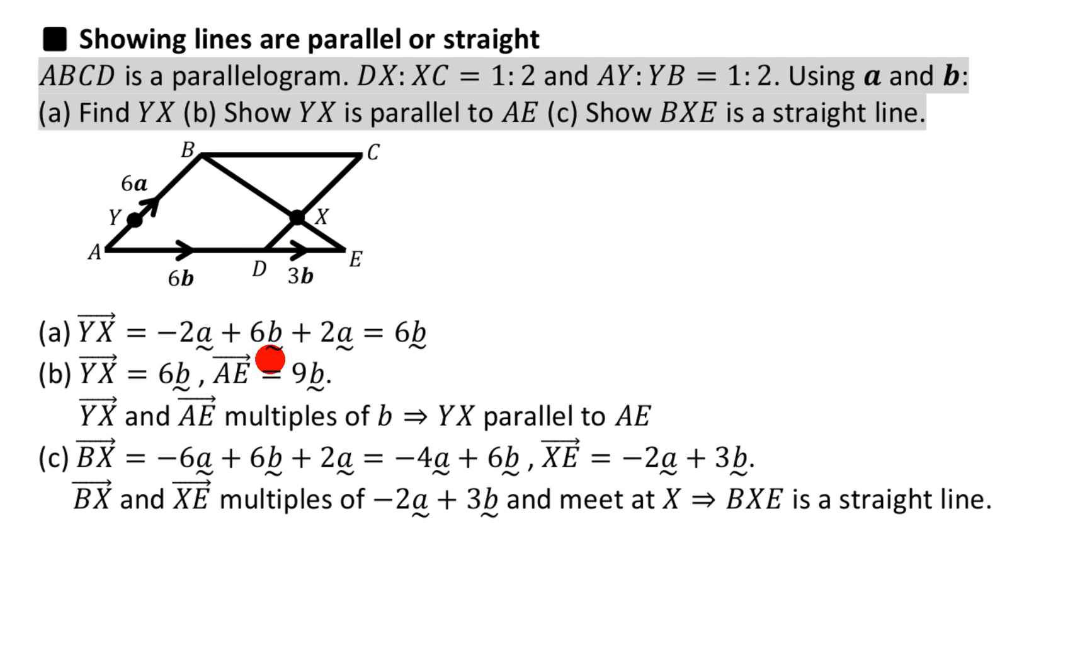So I've gone minus 6a, like it says there, then 6b, like it says there, and 2a - we said earlier on that was 2a. And then if you simplify that, you get that. Minus 6a plus 2a is minus 4a, 6b is obviously 6b.